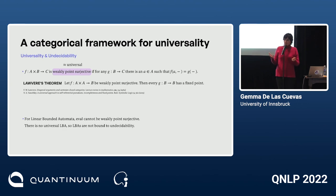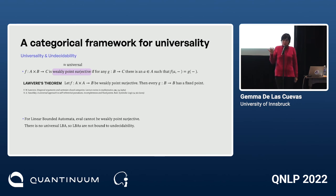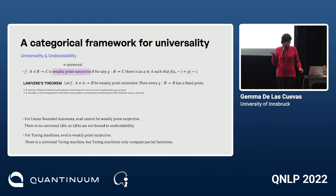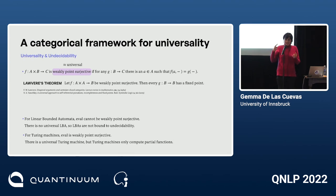For linear bounded automata, which are weaker than Turing machines, the evaluation function cannot be weakly point surjective — there is no universal LBA, and therefore they are not bound to undecidability. But for Turing machines, the evaluation is weakly point surjective, so there is a universal Turing machine, but then they are bound to Lawvere's theorem: there are undefined points — non-halting points — meaning Turing machines can only compute partial functions. The trade-off is transparent here.